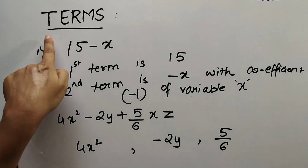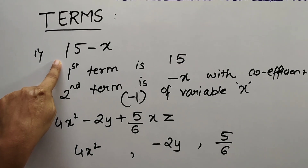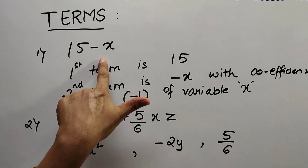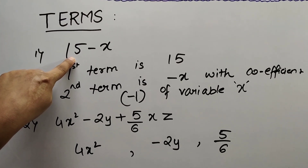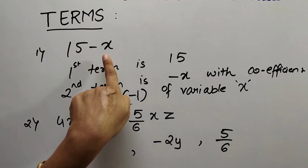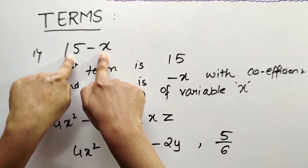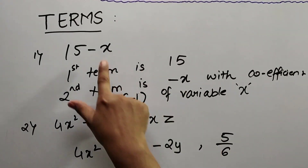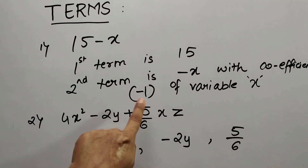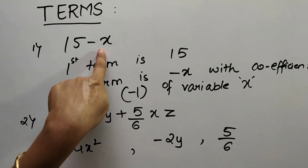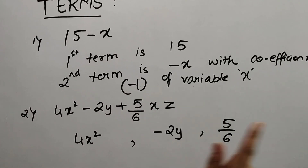In Algebraic Expressions, we are going to see what are terms. Let us consider an example. In this expression, there are two terms. The first term is 15, which is a number, whereas the second term is minus x. These are known as terms. Minus x is a term which contains a coefficient. Since there is no number shown, the coefficient is always 1, so the coefficient of minus x is minus 1 and the variable is x.